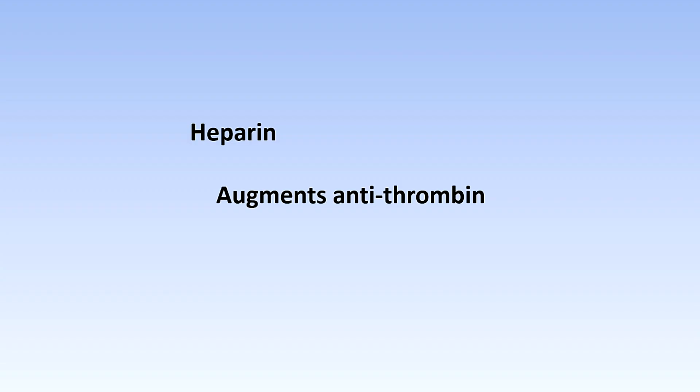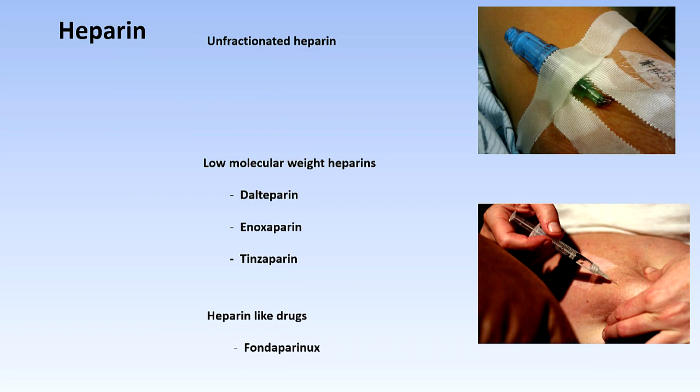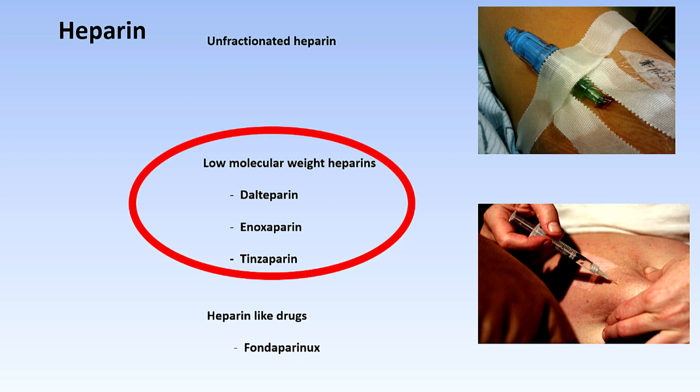Let's talk about anticoagulant drugs. First of all, heparin. How does it work? Heparin augments the action of antithrombin by about a million times. We can use it in a number of different forms. For example, unfractionated heparin is given as a continuous infusion in some circumstances, but the low molecular weight heparins are in much more common use these days and they're given as a subcutaneous injection.